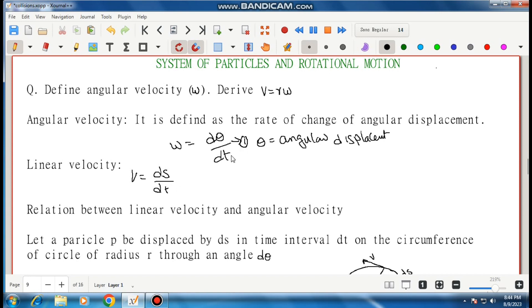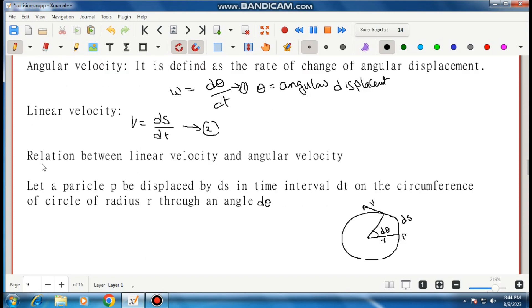This is equation one, this is equation two. Now I have to derive the relation between linear velocity and angular velocity. Let a particle be displaced by ds in time interval dt on the circumference of a circle